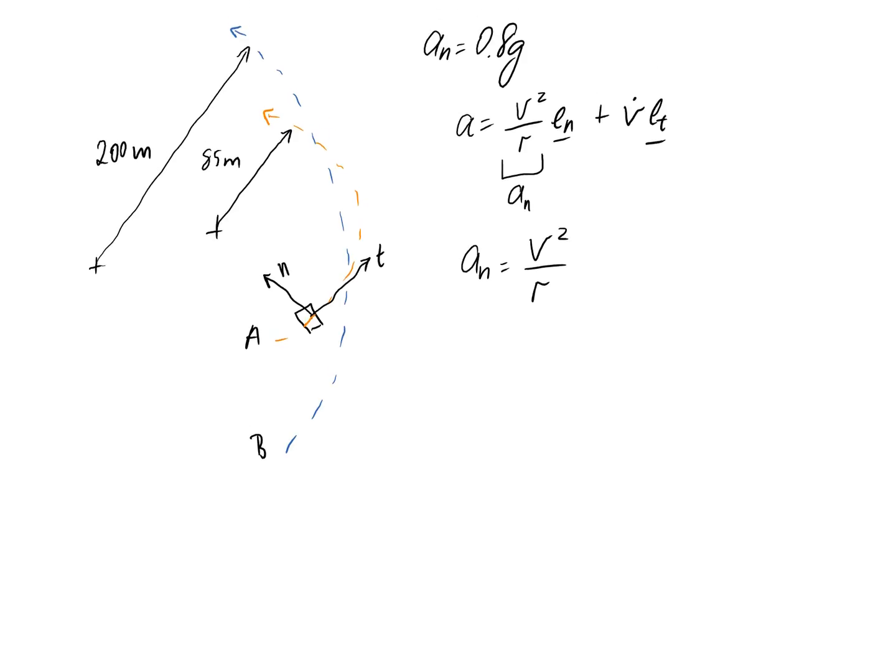If we start with car A, we want to know what the velocity is. We can rearrange and get this. Now it's just a matter of substituting in. Car A is limited to 0.8 g's. So, 0.8 times 9.8 for gravity, multiplied by the radius. Car A here is on an 85 metre circle. From that, we can conclude that car A can drive a maximum of 25.8 metres per second.